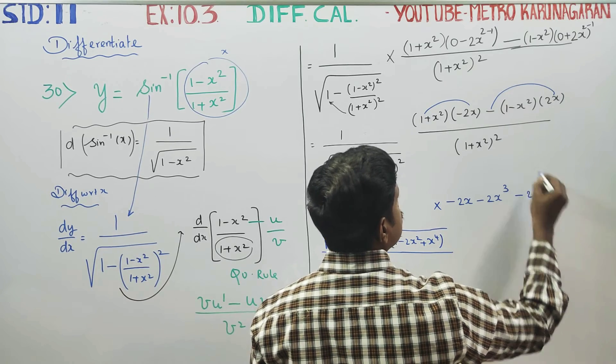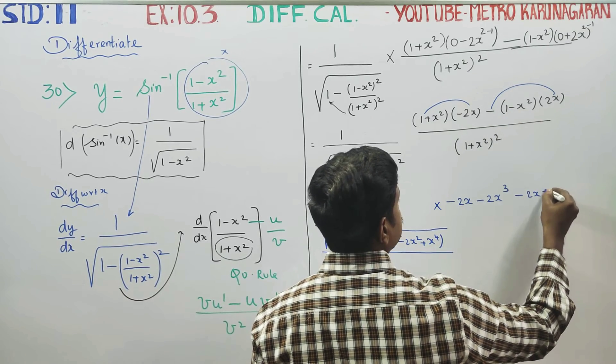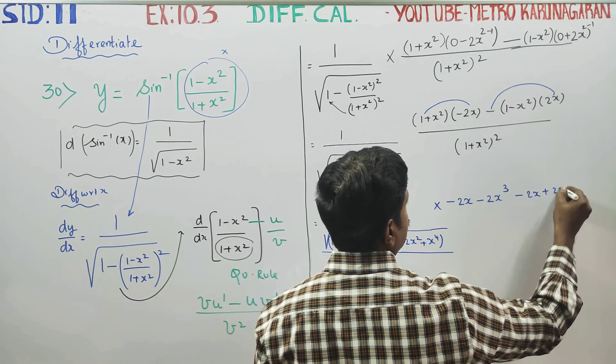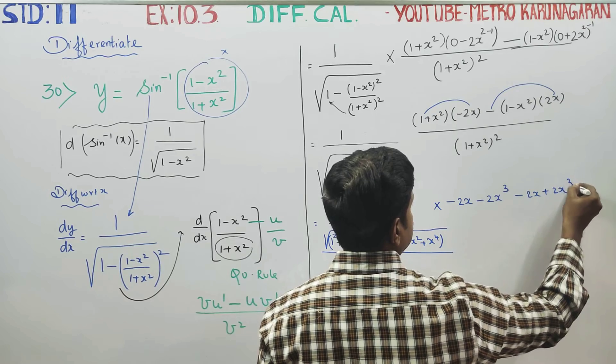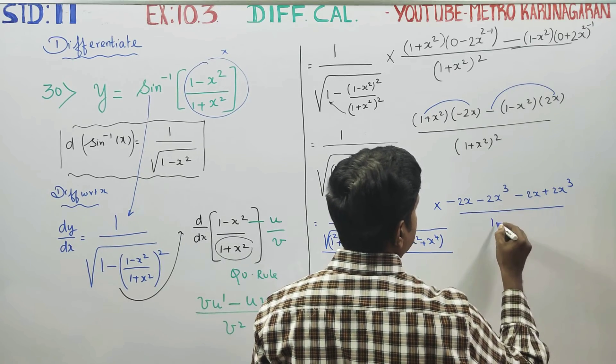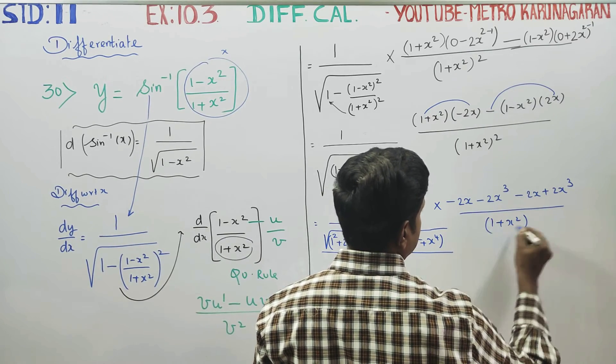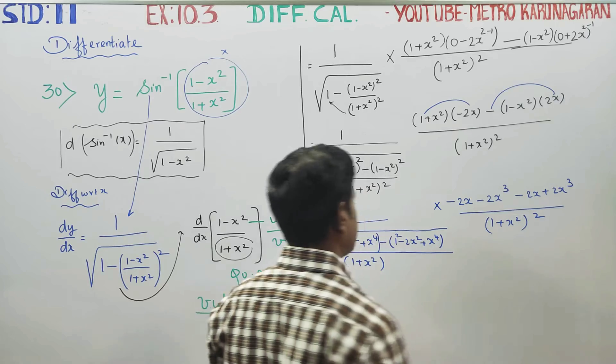Again minus 2x. Minus into minus gives plus 2x power 3. The whole expression is divided by (1 plus x square) whole square.